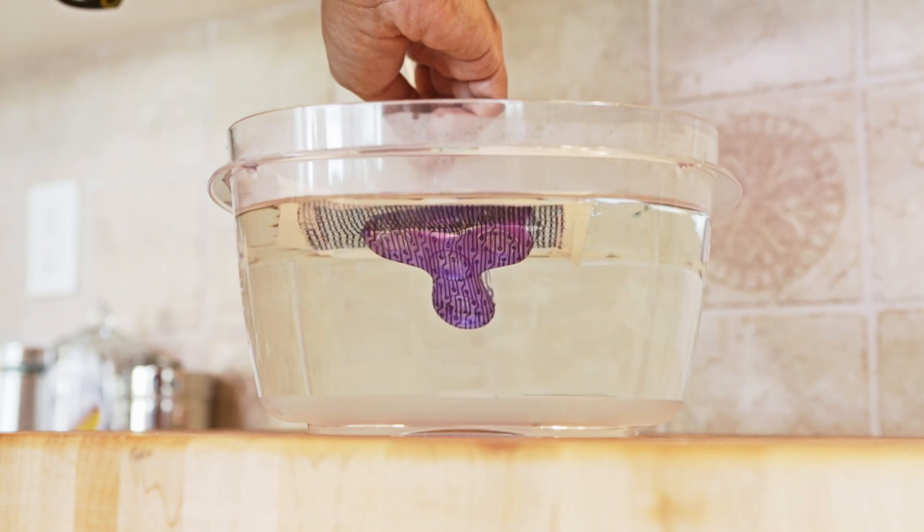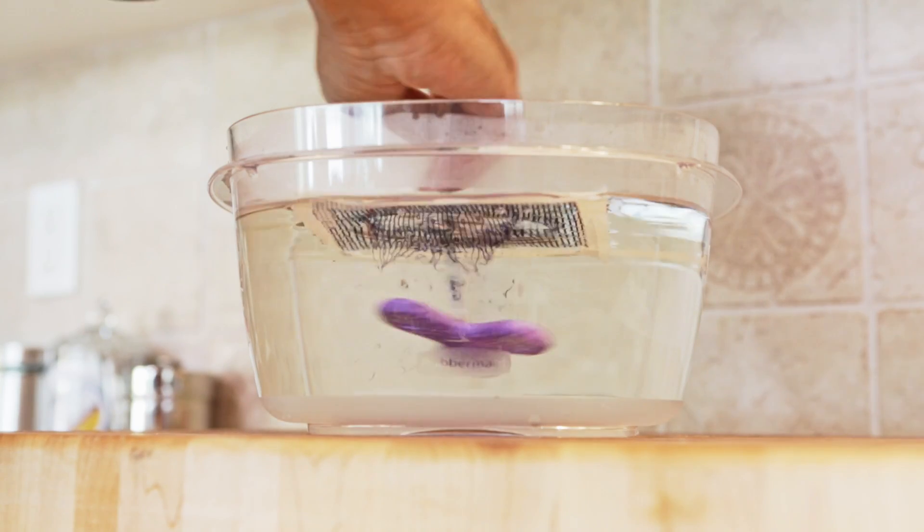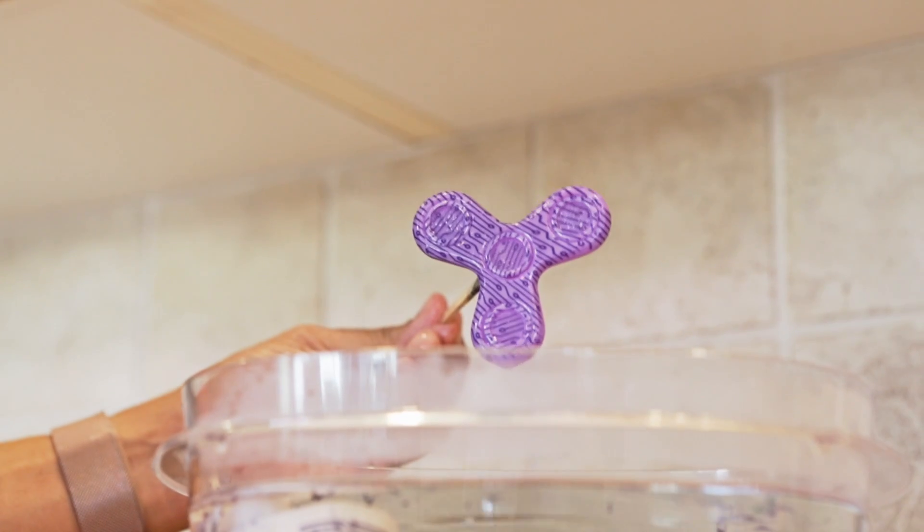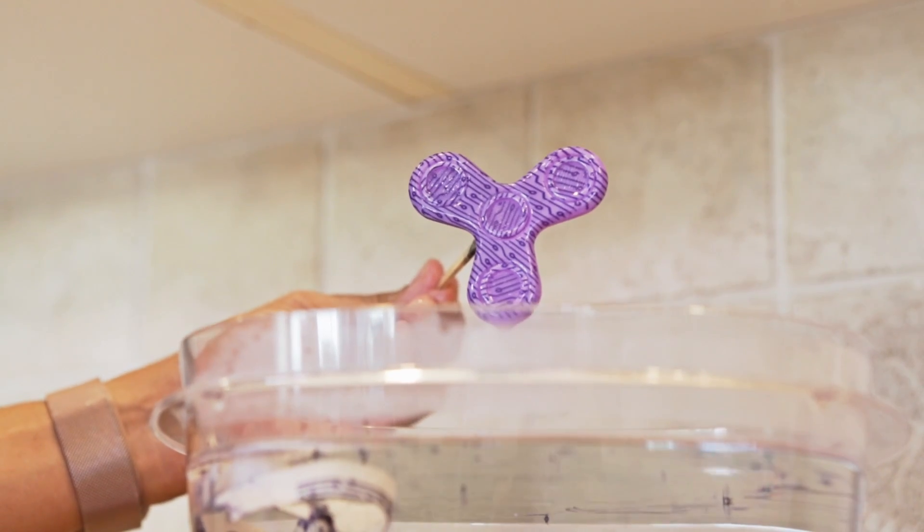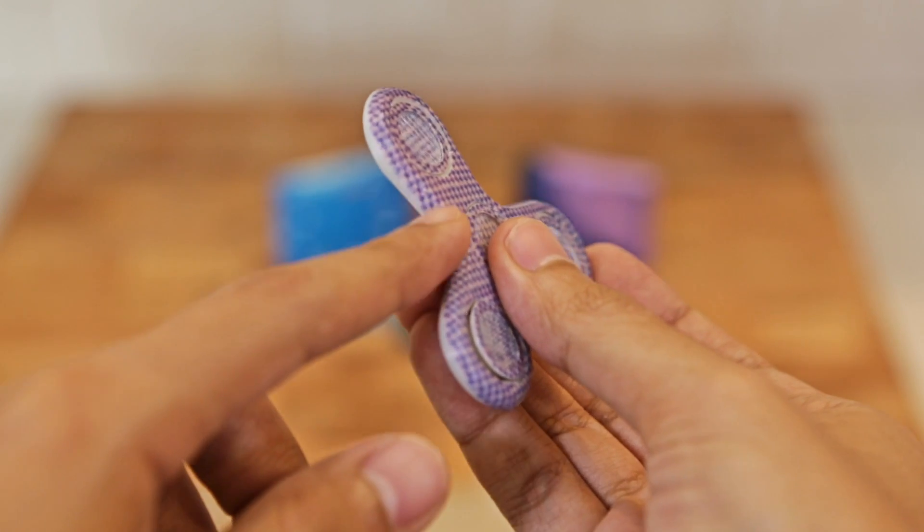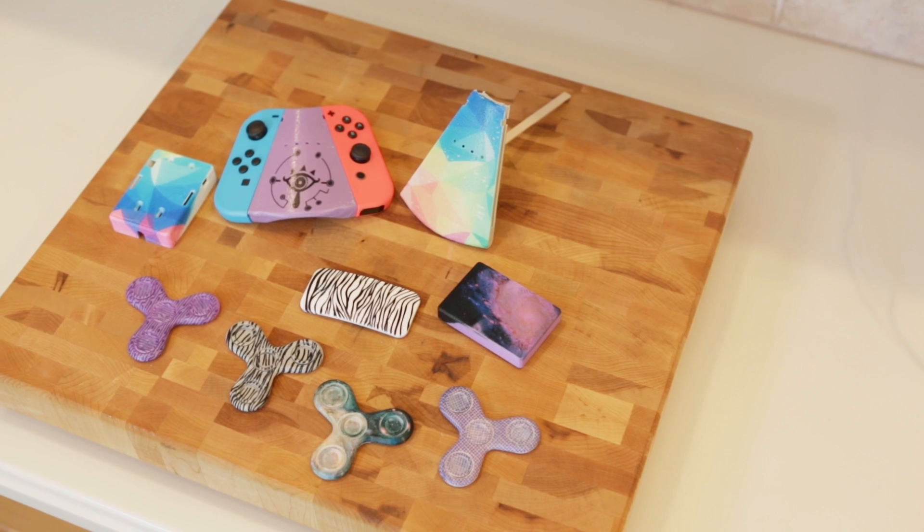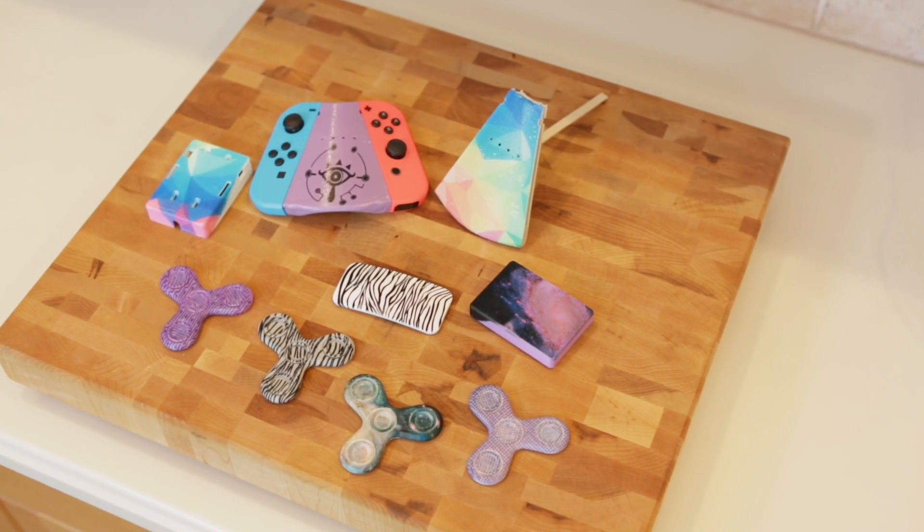Hydro dipping is a post-processing technique that allows you to wrap graphics around objects. With this method, you can add some pretty cool textures and full-colored graphics to your projects. Images can actually wrap around 180 degrees, so you can get some nice details on the sides and edges of your parts.